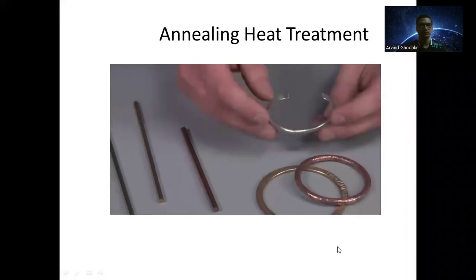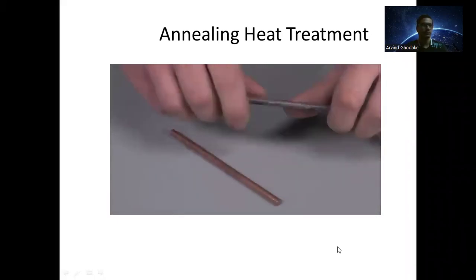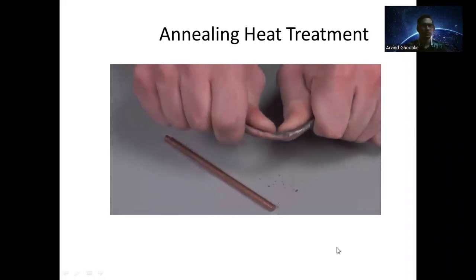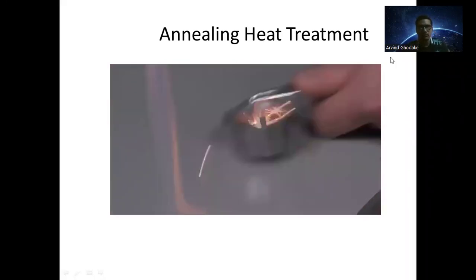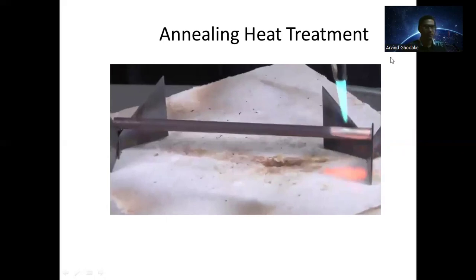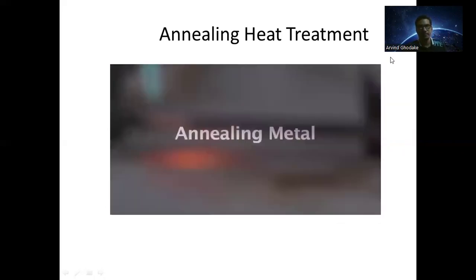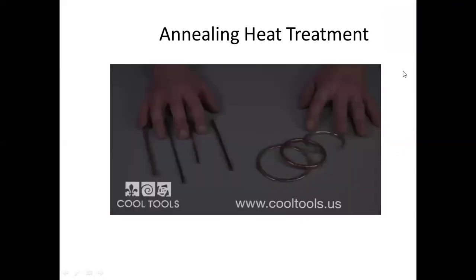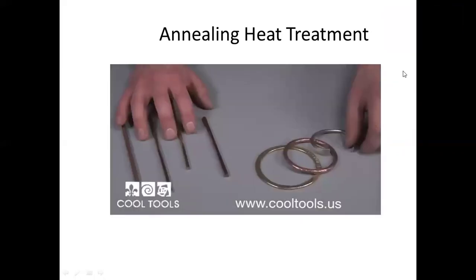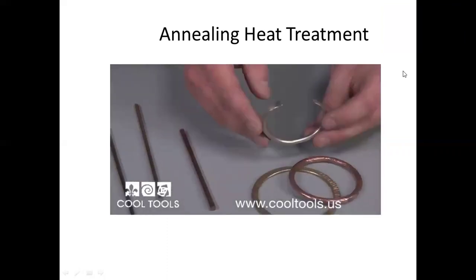Now we will see a video demonstration of the annealing heat treatment process. Working with lower gauge metals can sometimes be difficult when forming, bending, and shaping. When creating jewelry, thick metals can take a lot of time and effort. In this tool demo, learn how to anneal your metals to make working with thick metal easy. This metal rod is great for making bracelets and rings, but forming it can be a little difficult.